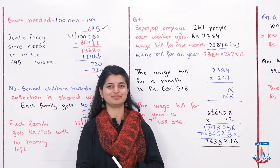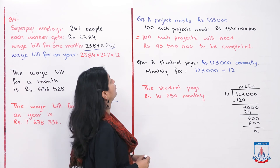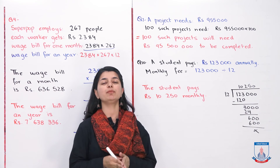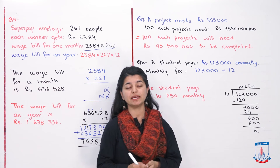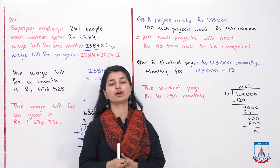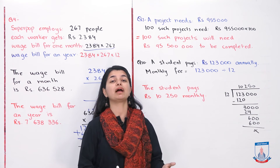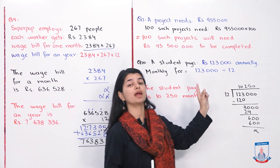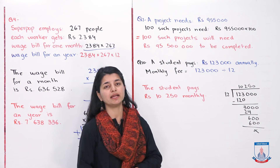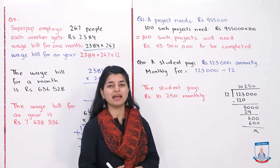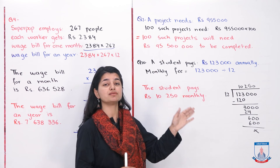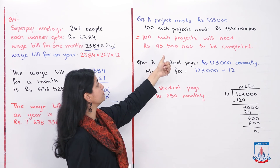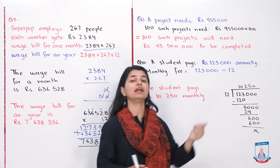Question number 7: A project needs Rs 955,000. How much would 100 such projects cost? One project costs Rs 955,000. For 100 projects you multiply by 100. When multiplying by 100, you simply add two zeros to the number. So 955,000 multiplied by 100 becomes 95,500,000. The statement: 100 such projects will need Rs 95,500,000 to be completed.